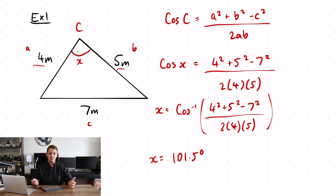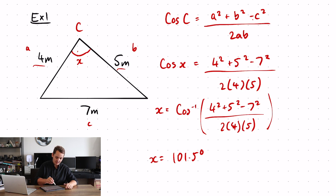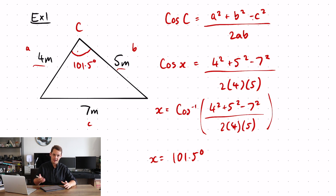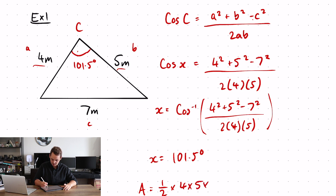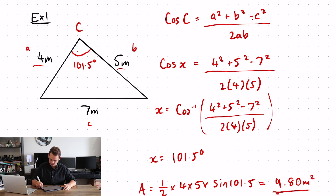Now all I need to do is use the area formula with the two sides and the angle between. My sides a and b are already labeled and now I have the angle between as 101.5 degrees for C. So the formula — half AB sin C — gives me: half times 4 times 5 times sine 101.5, which equals 9.80 meters squared.